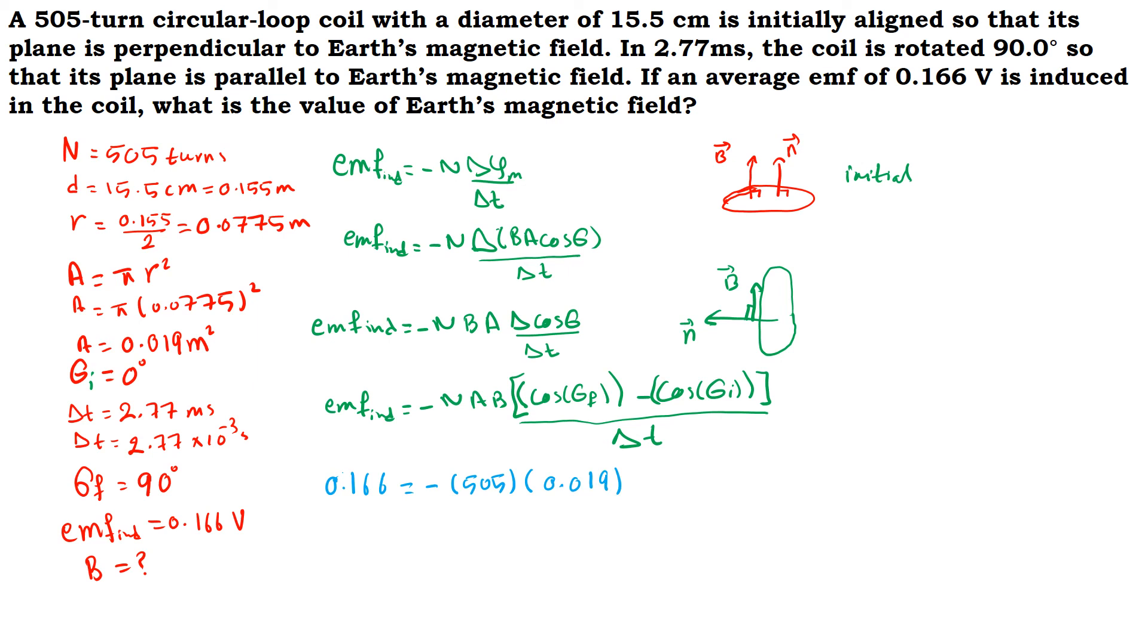Now we replace the values. The induced electromotive force is given as 0.166 volts, equal to minus. We have 505 turns. The area we found as 0.019 square meters. The magnetic field strength is unknown, B, times delta T.